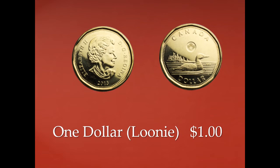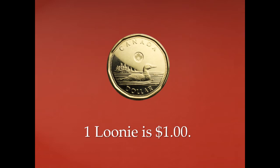This is our one dollar coin. Do you remember what we call it? We call it a loonie — because on the tail side there's a picture of a loon. You'll notice it says 'Canada' above the loon and 'dollar' underneath the loon. On the head side we have a picture of Queen Elizabeth the Second. One loonie is equal to one dollar — it is 100 cents — so we only need one coin to equal one dollar.